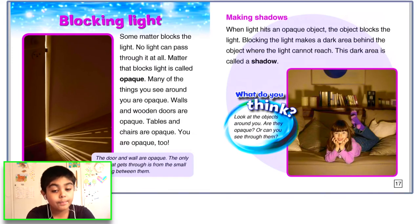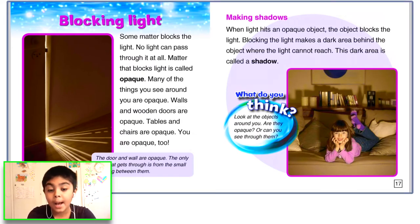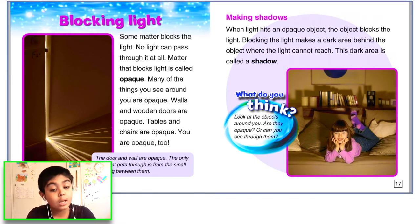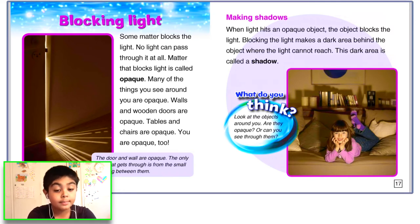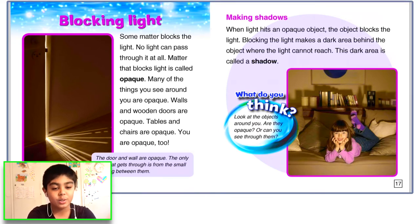Blocking light. Some matter blocks the light — no light can pass through it at all. Matter that blocks light is called opaque. Many of the things you see around you are opaque. Walls and wooden doors are opaque. Tables and chairs are opaque. You are opaque too.